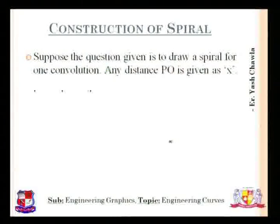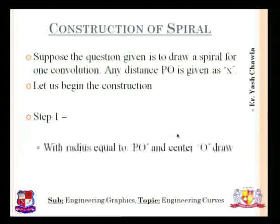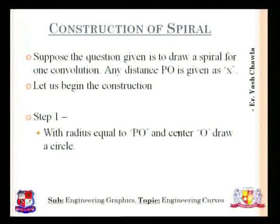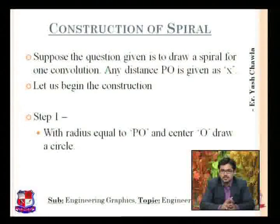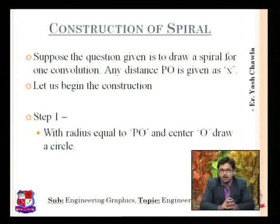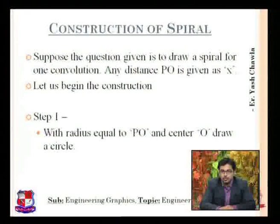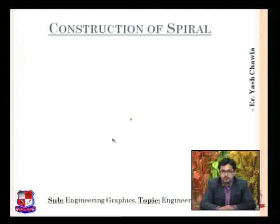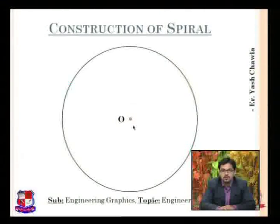Moving on — construction of a spiral. This is also easy. Suppose in the question we are given to draw a spiral and the distance PO is given as X. We begin by taking radius equal to PO and center equal to O. Let us draw a circle first — we have taken a point O and we are going to draw a circle.